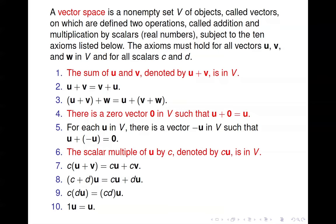Axioms two and three are standard properties: number two is the commutative property, and three is the associative property. Number four says that in the set V there is a zero vector such that when you add it to any vector in the set, you just get that vector back — u plus zero equals u. Notice number one refers to elements that have to be in the set, and number four also says there has to be this zero vector in the set. Number six follows along with that too.